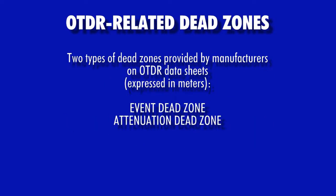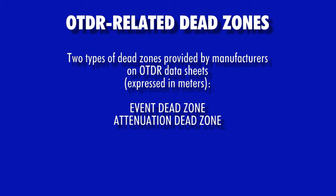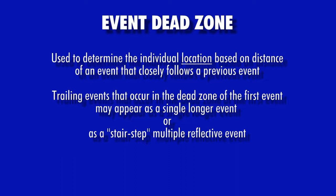The second factor is the OTDR-related dead zone, of which there are two types: event dead zone and attenuation dead zone. OTDR manufacturers include these specifications on their OTDR data sheets, expressed as distance in meters. Event dead zone is used when the technician is simply trying to determine the individual location of two or more closely spaced events. Any trailing events within the event dead zone of the first event, especially if the first event has saturated the OTDR's avalanche photodiode or APD, may appear to the OTDR as a single, albeit wider event, or may appear as a stair step, also referred to as a multiple reflective event.